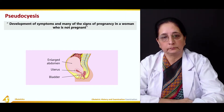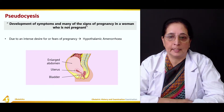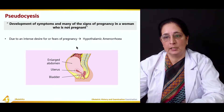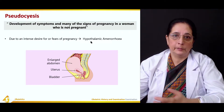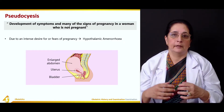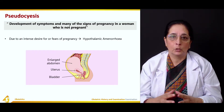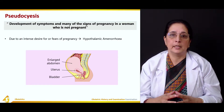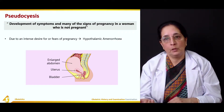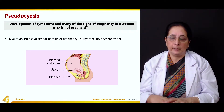Pseudocyesis is the development of symptoms and signs of pregnancy in a woman who is not pregnant, due to intense desire or fear of pregnancy. Both intense desire and fear can lead to hypothalamic amenorrhea, where production of gonadotrophic hormones is affected, resulting in amenorrhea — and the woman thinks she might be pregnant.